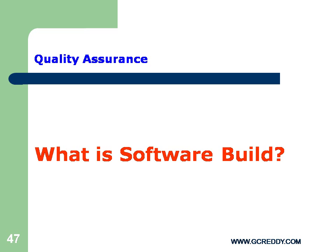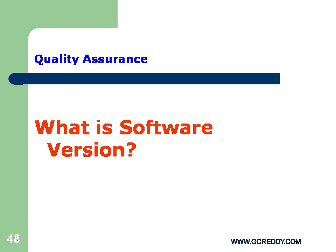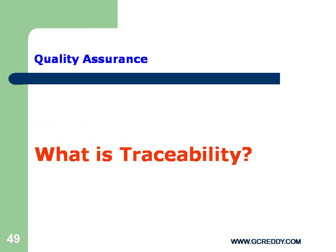What is Software Version? Software versioning is the process of assigning either unique version names or unique version numbers to unique states of software. What is Traceability? A document showing the relationship between test requirements and test cases.